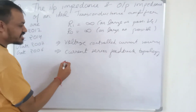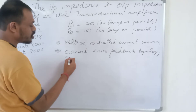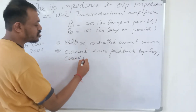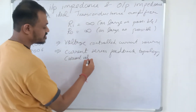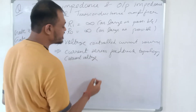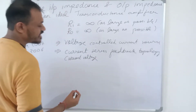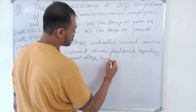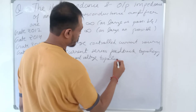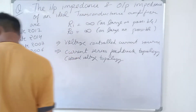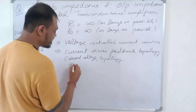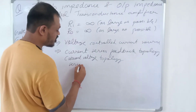Current Series Feedback Topology is also called Current-Voltage Topology — specifically, Current Sampling and Voltage Mixing. It is also called Series-Series Topology.